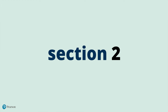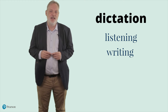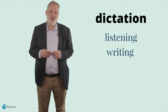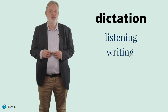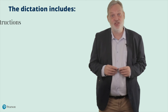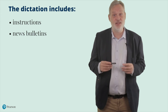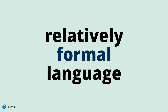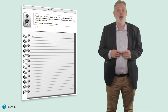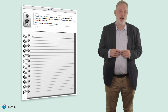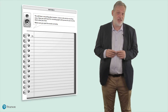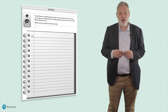Section 2 is a special section because it combines the skills of listening and writing — it's a dictation. It aims to test ability to understand a short utterance by transcribing a spoken text. The texts include instructions, news bulletins, announcements — relatively formal language. Test takers listen to one person speaking and write exactly what is heard with correct spellings. The extract is played twice, the second time with pauses, giving time to write down word for word what is heard.